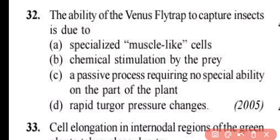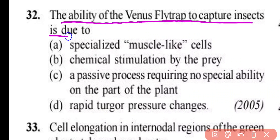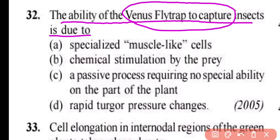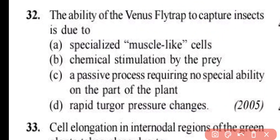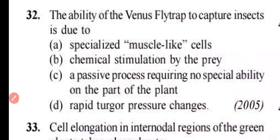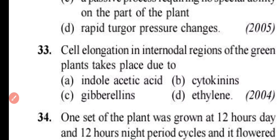Question number 32. The ability of the Venus fly trap to capture insects is due to rapid turgor pressure changes.